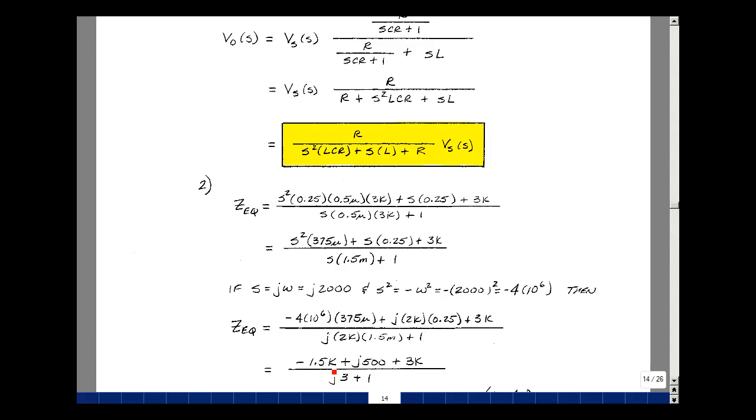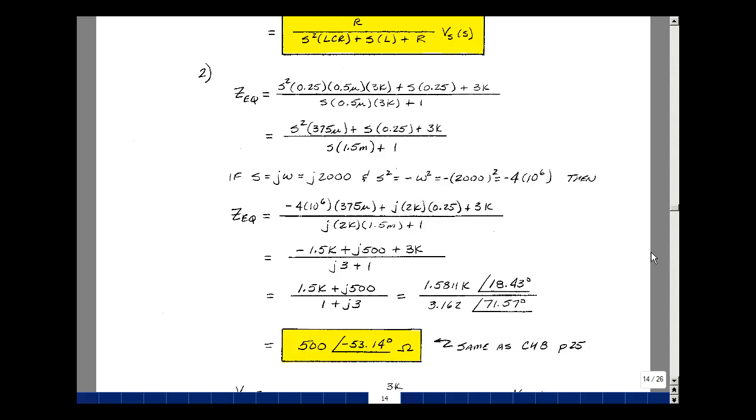Multiplying through, I get minus 1.5k, this is J500, then 3k. This equals 3 plus 1. The milli and k cancel. Put this into polar form. Converting with our calculator, we get magnitude a little bigger than 1.5k, in the first quadrant, angle less than 45 degrees. For the denominator, first quadrant, a little bigger than 3, angle bigger than 45 because this is longer than this, so 71.57. This ratio is 500, and 18.43 minus 71.57 is minus 53.14 degrees. That's the same result we had on page 25 in chapter 8.